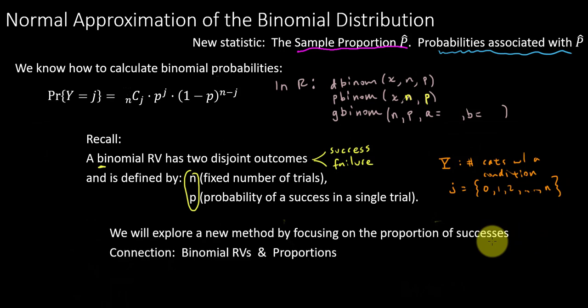Now instead of focusing on the number of successes, we're going to focus on the proportion of successes. And so the sample proportion has a little formula. It's very quick and painless. It is just the number of successes, j over n. So the connection with the binomial variable here is j is in the numerator and we just divide by n. Pretty painless.